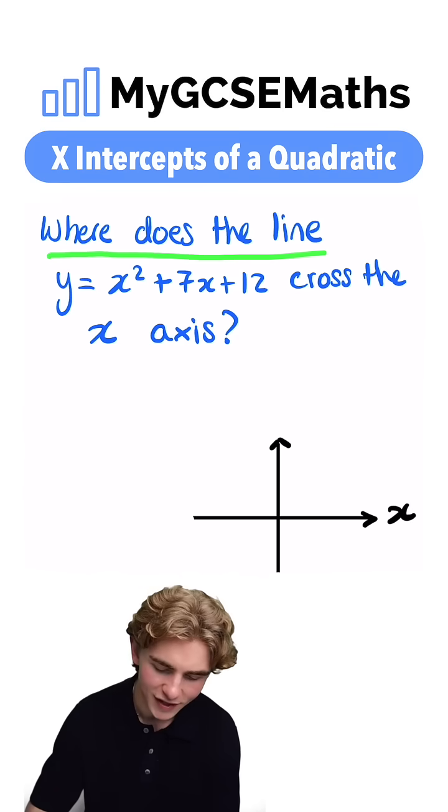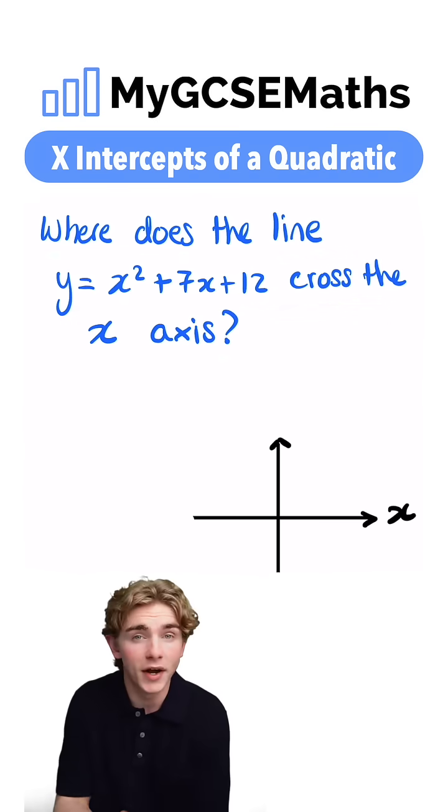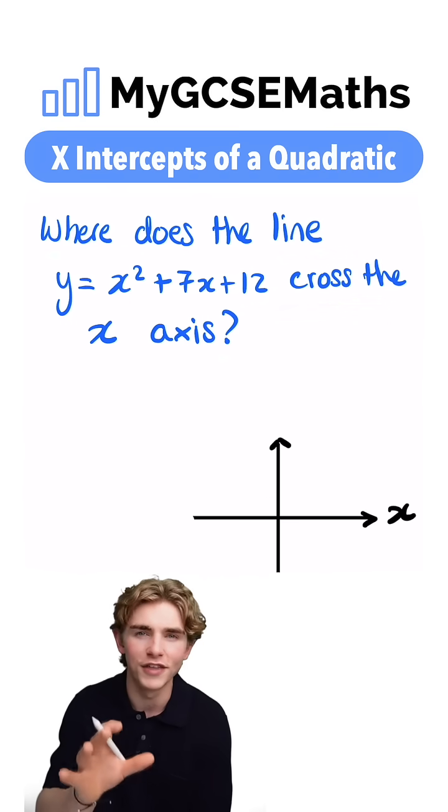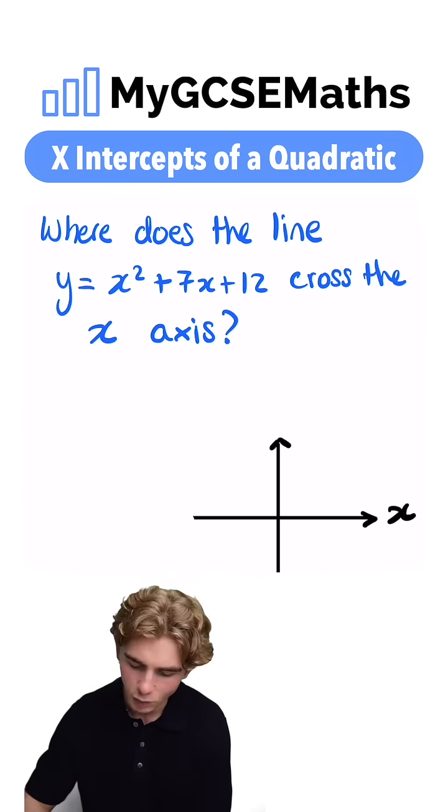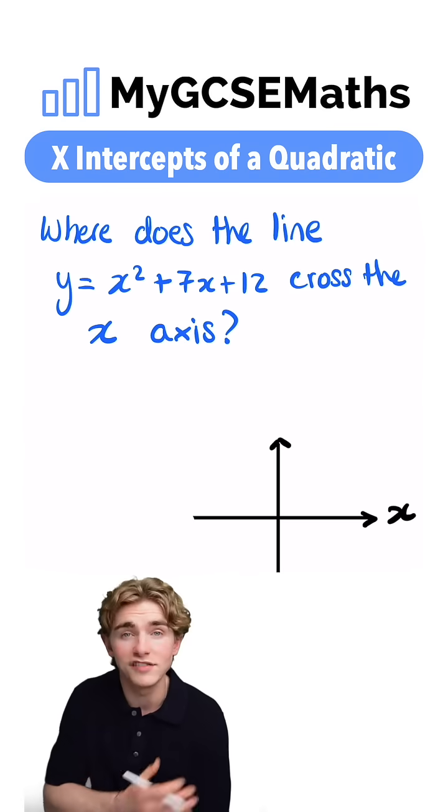Where does the line y equals x squared plus 7x plus 12 cross the x-axis? Now, what we're going to have to do to find this is we're going to have to substitute in y equals 0 and then solve the equation. Why is that? That's because whenever we are on the x-axis, the height of the line is effectively 0. The value of y is equal to 0.